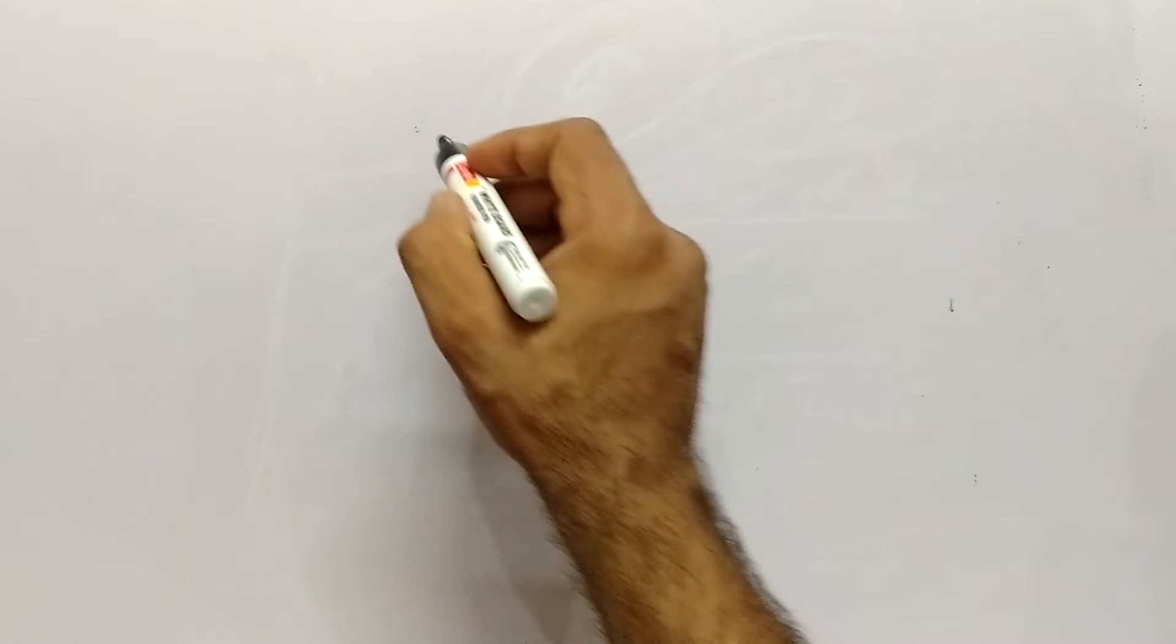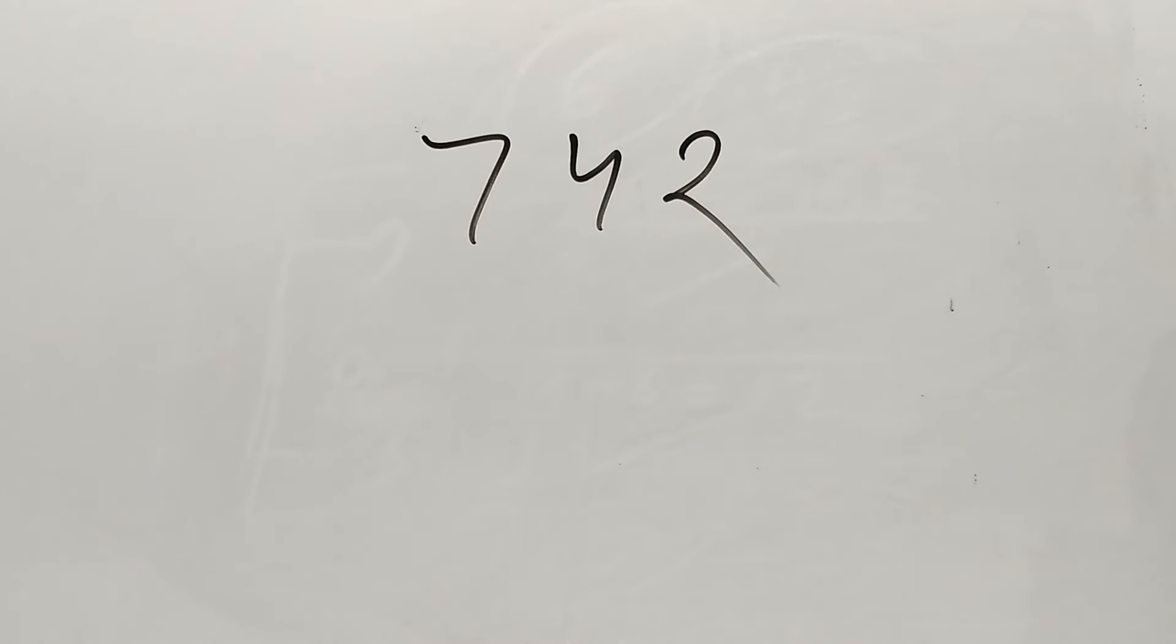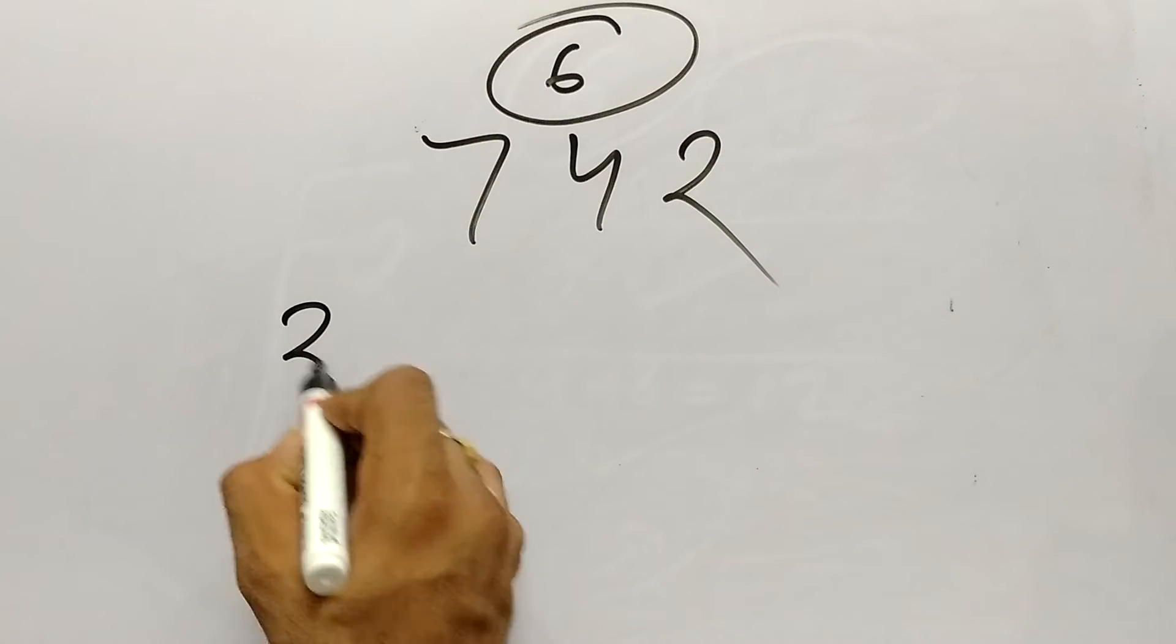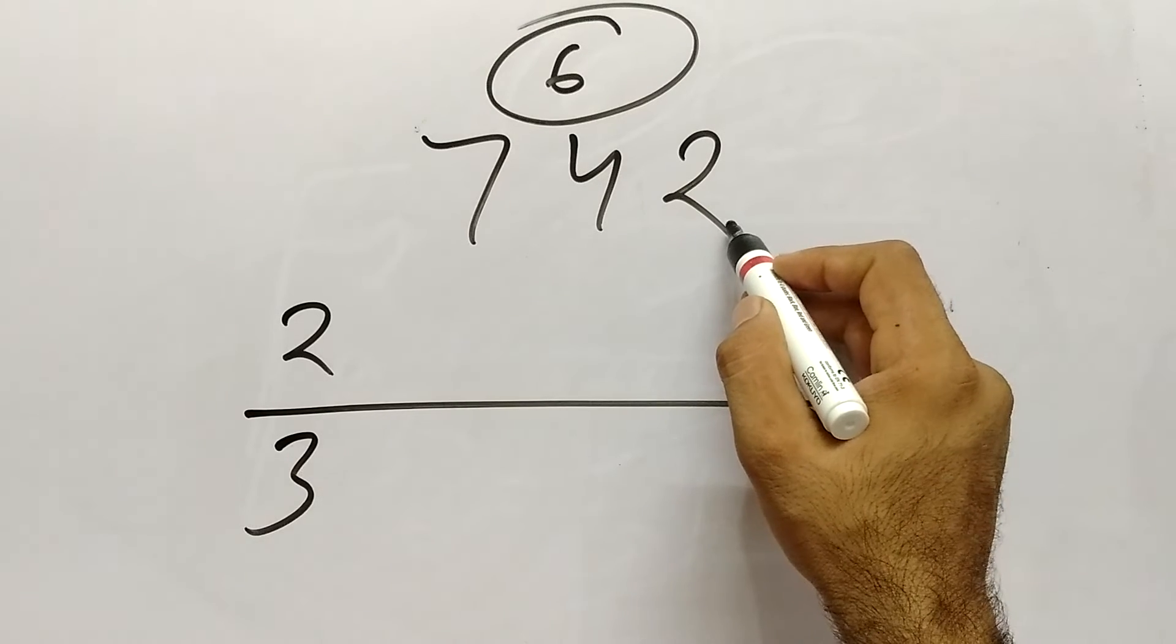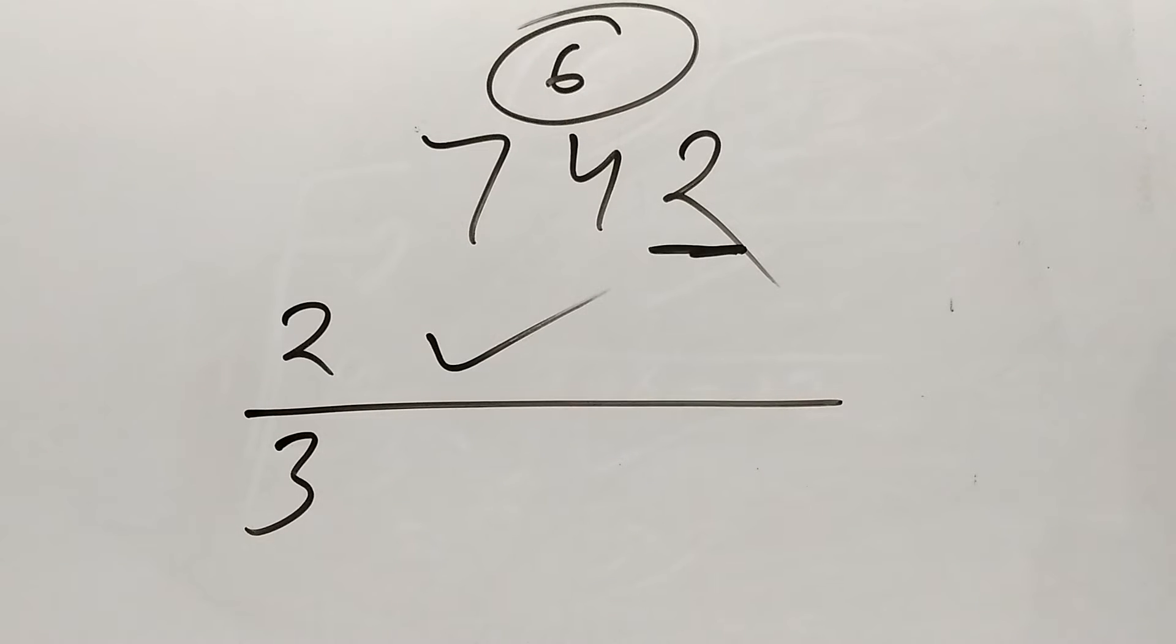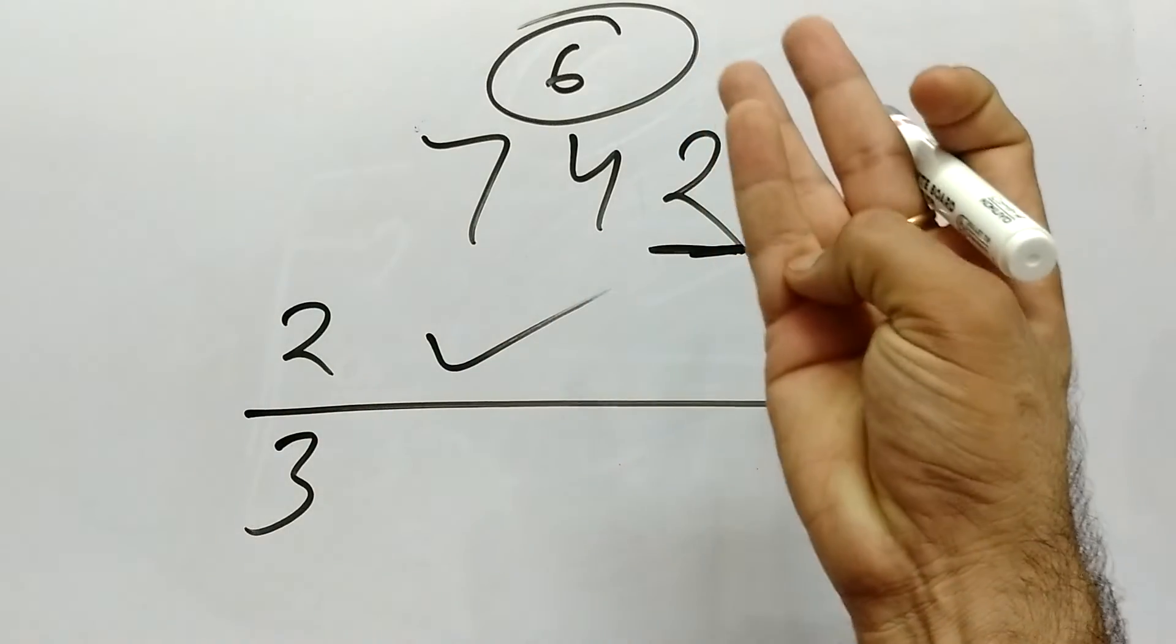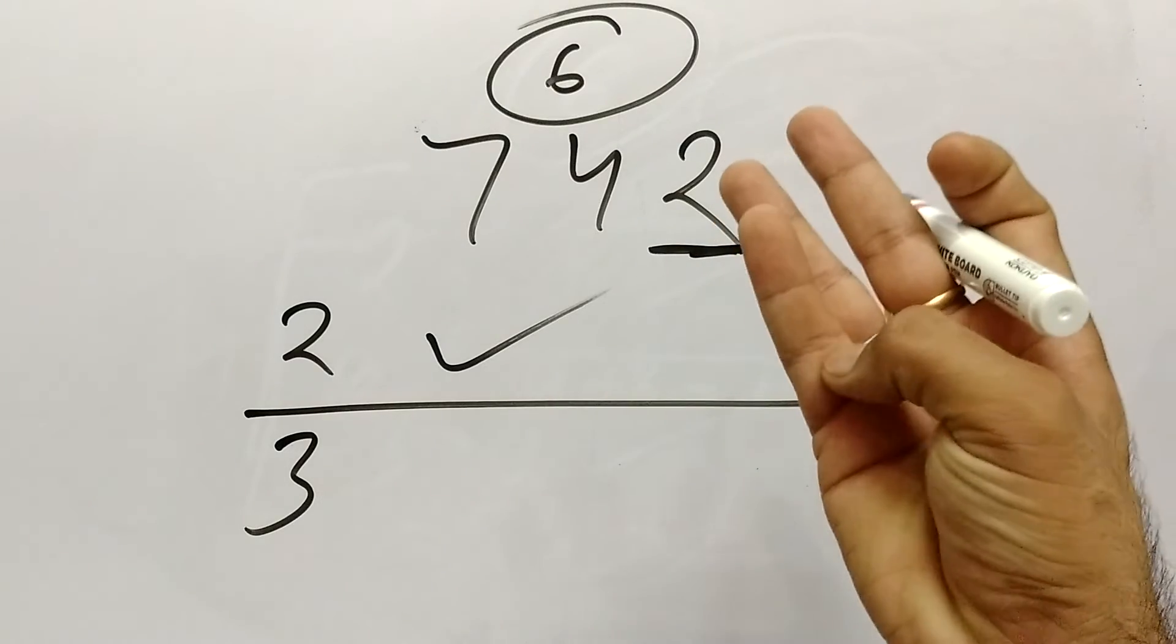For example the number is 742. We have to check ki ye number 6 se divisible hai ya nahi. For this what we are going to do: 2 and 3 ka divisibility check karenge. Last mein 2 aa raha hai, even number aa raha hai unit place pe, so what you can say? Yes it is divisible by 2. Ab 3 ke liye kya karenge: in sab ko add kar denge. 7 plus 4, that is 11, and 11 plus 2, 13.